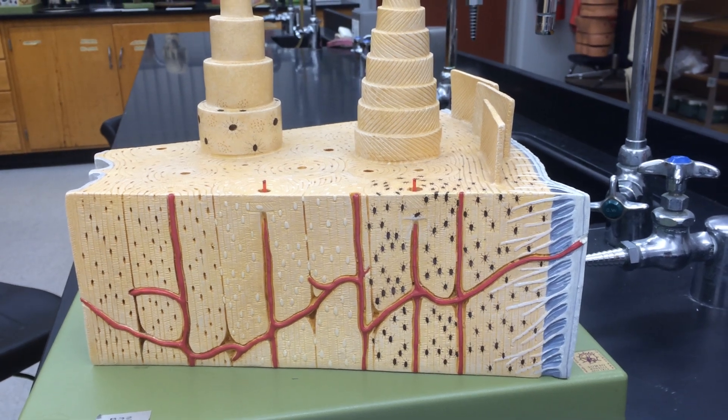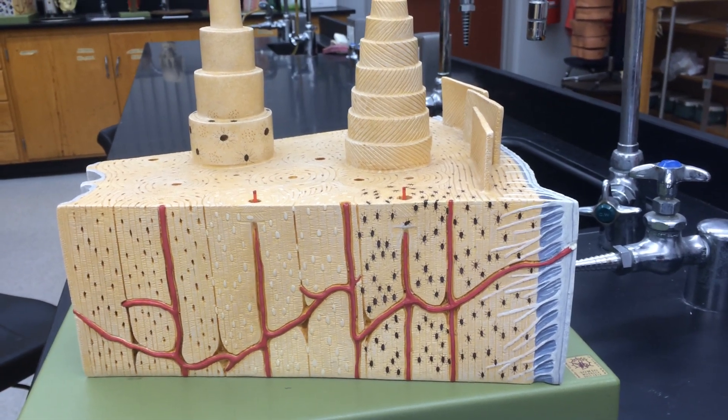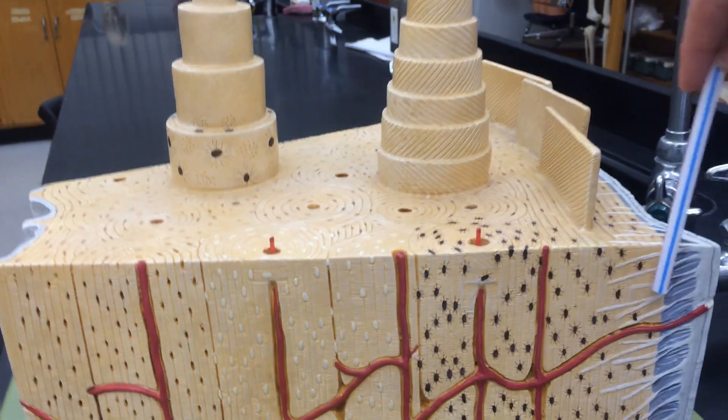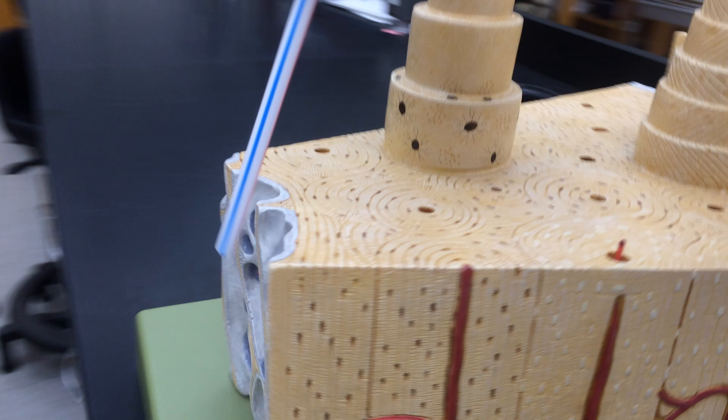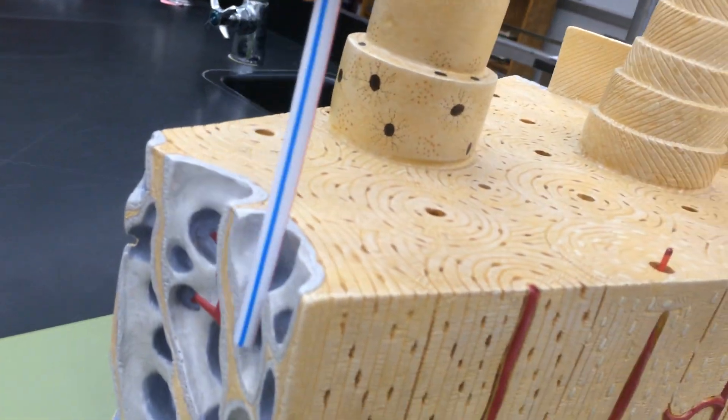This model is a representation of the microscopic structures found in compact bone. This area right here is representing the compact bone while this area here is representing the spongy bone.